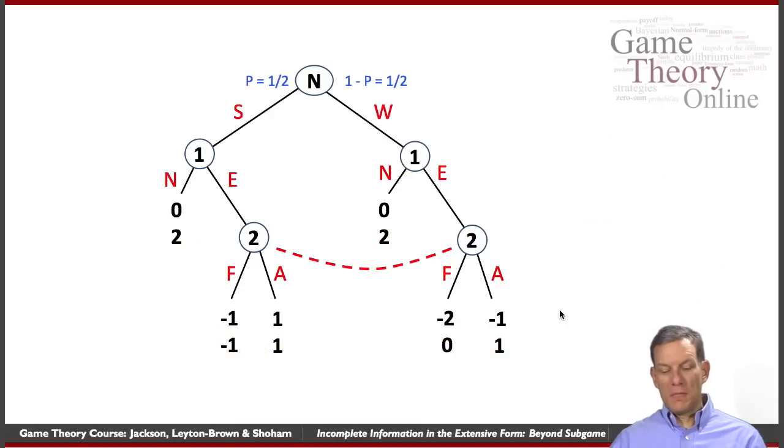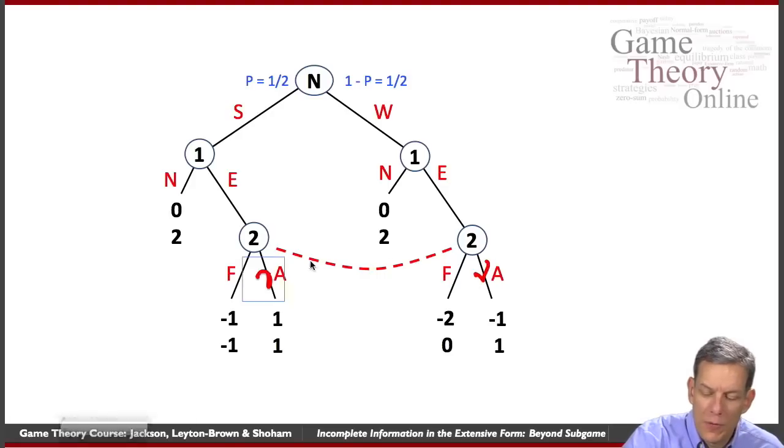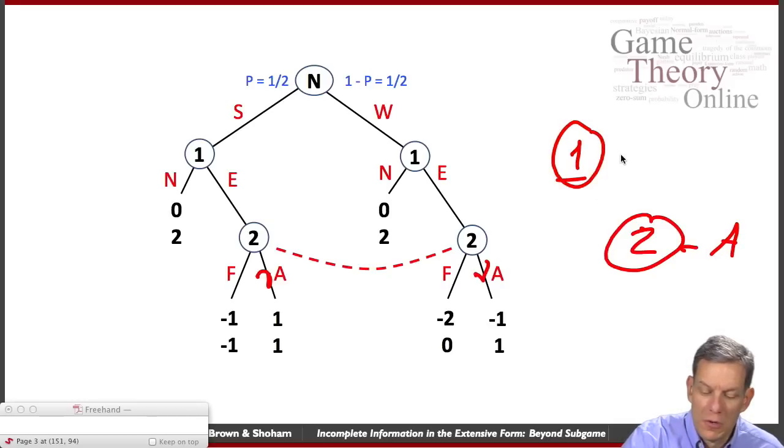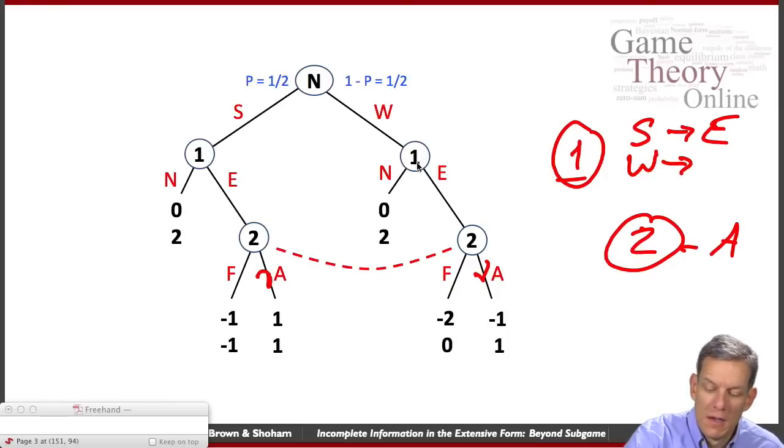So what if firm two was going to acquiesce? So there's another strategy where for two, we imagine them acquiescing. So what should one do? Well, if one then is strong, they should enter. They get a payoff of one here, zero if they don't. If they're weak, what should they do? If they're weak, well, they shouldn't enter, because they get a minus one here, a zero here. So weak should not enter. This is another Nash equilibrium.